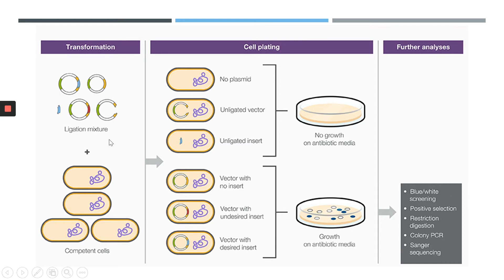During the process of ligation, various things can occur. We could have the correct insert DNA fragment inserted into the vector at the correct spot within the multiple cloning site. Alternatively, we could have vectors that have re-ligated, meaning the insert DNA fragment has not been introduced. We could also have vector DNA with an incorrect insert introduced at the correct site, or vector DNA that has not re-ligated. Since the entire ligation mixture is incubated with the competent cells, selecting for the correct recombinant DNA plasmid requires further steps.